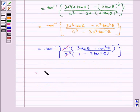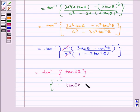So, we are left with tan inverse of 3 tan theta minus tan cube theta by 1 minus 3 tan square theta, because we have this identity which is tan 3a equals 3 tan a minus tan cube a divided by 1 minus 3 tan square a.